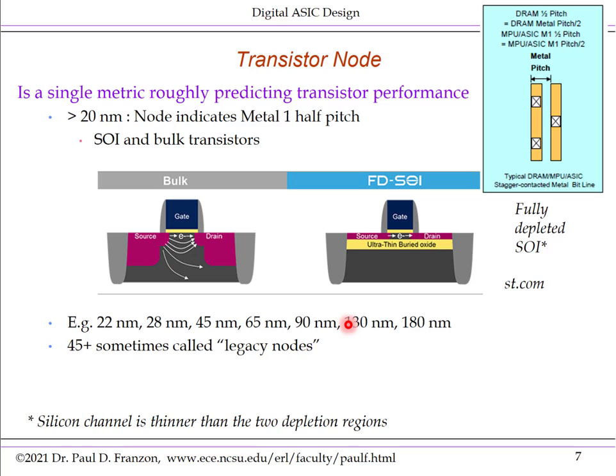Next, I'll introduce the concept of transistor node. This is a single metric that characterizes different transistor technologies and roughly predicts the performance of parts fabricated in that node. Transistor node refers to a fabrication technology — for example, going to Global Foundries and using their 28-nanometer technology, TSMC's 7-nanometer technology, or Intel's 22-nanometer technology. Just by that one number, you get a fairly good idea of what that means in terms of performance and the technology mix being used.